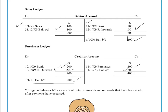Here in the debtor account in the sales ledger, we have a balance brought down unusually on the credit side of 100. That's because we'll want to check that the returns are genuine — that there is a reason for them returning the goods. If they said they're broken, we need to check they are actually broken. Until we actually give them the money back, we will have this irregular balance brought down as a transaction on the credit side of our debtor account.